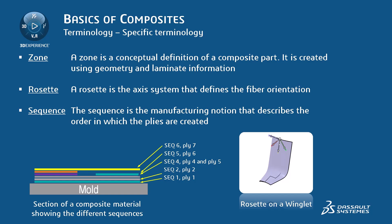The X direction of the axis system represents 0 degrees fiber orientation, and the Y direction represents 90 degrees fiber orientation. Finally, the sequence is the manufacturing notion that describes the order in which the plies are created. When creating a ply in a ply group, a sequence is automatically created. The sequence contains the plies that can be laid on the mold during the same sequence in the manufacturing process.